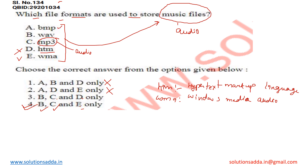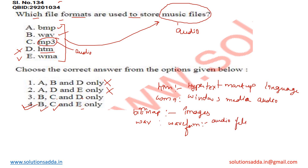Let's also understand the BMP and WAV files. BMP stands for bitmap and this extension is used for images. Next, WAV stands for waveform audio file format — it is an audio file format. So option B, C, and E is the right answer, and option number four is correct.